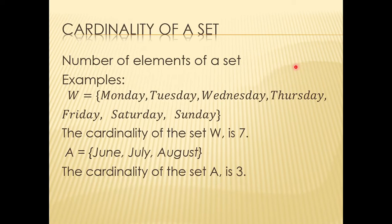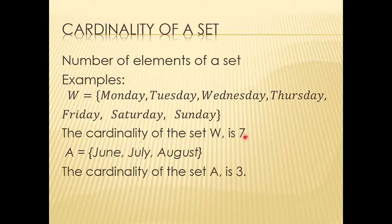Let's now move on to the cardinality of a set. Cardinality pertains to the number of elements in a set. For example, set W equals Monday, Tuesday, Wednesday, Thursday, Friday, Saturday, and Sunday — counting the elements gives a cardinality of 7. Another example is set A with elements June, July, August — counting gives a cardinality of 3. Very simple.